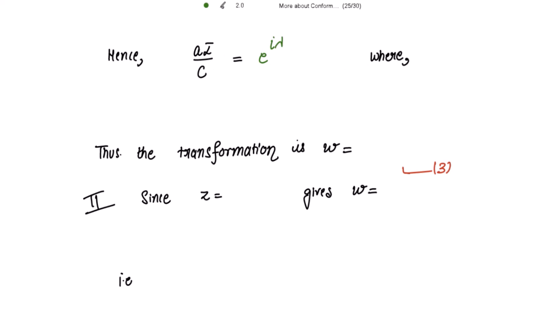Now the transformation becomes, putting the value of aᾱ/c as e^(iλ), the transformation becomes w = e^(iλ) · (z - α)/(zᾱ - 1). Please mark this as equation 3.